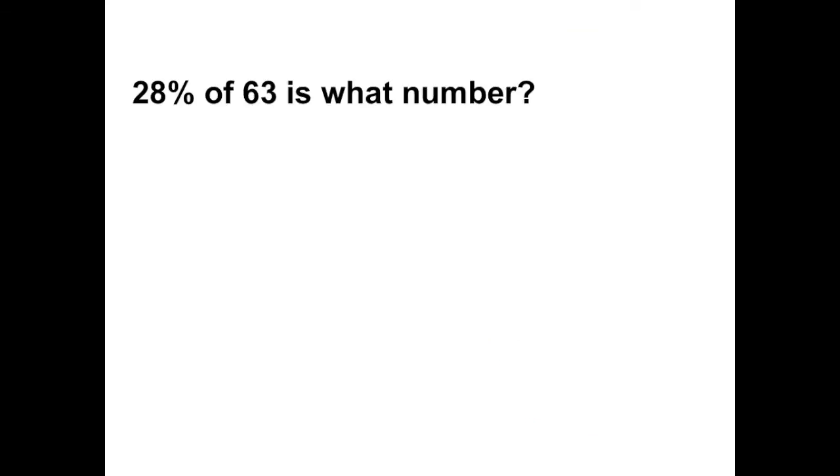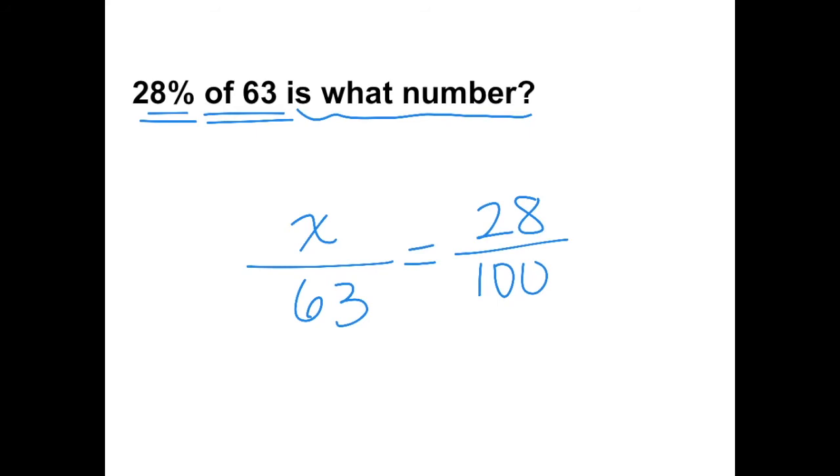28% of 63 is what number? We're given the percent and we're given the whole, and what we're missing is the part. So the part is what's missing—x out of 63 equals 28 over 100.